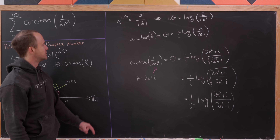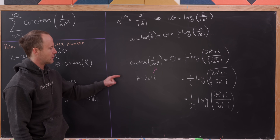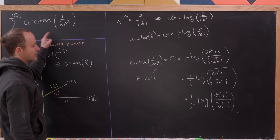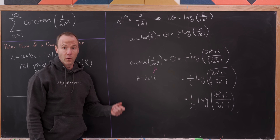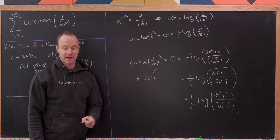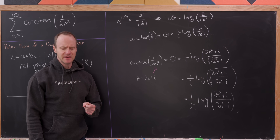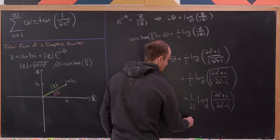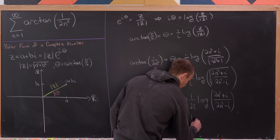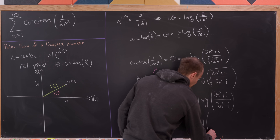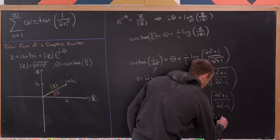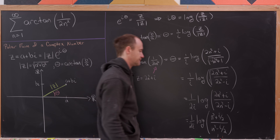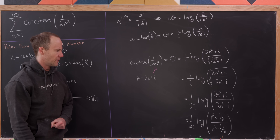Our arctan of 1 over 2n squared is exactly that, so we can rewrite our sum using this formula. Before we do that, I'd like to do one more step: multiply the numerator and denominator inside the logarithm by one half. That gives us n squared plus i over 2, over n squared minus i over 2. You'll see why that will be helpful in just a second.